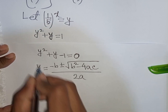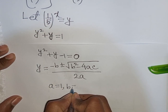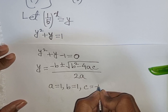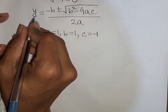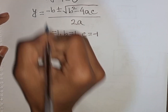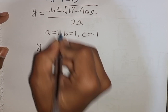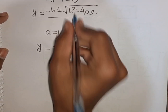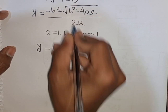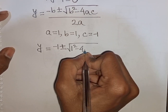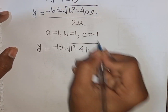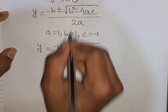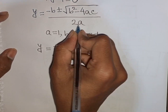Here a equals 1, b equals 1, and c equals negative 1. Substituting, y equals negative 1 plus or minus square root of (1 squared minus 4 times 1 times negative 1) divided by 2 times 1.